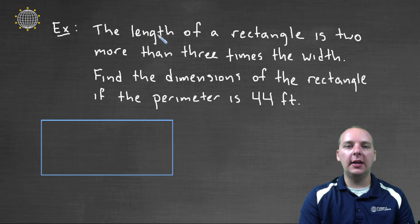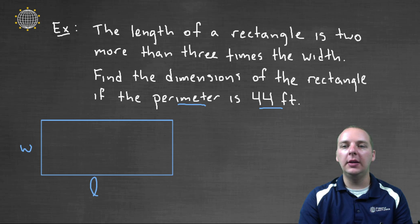So here it sounds like the length is a bigger number than the width, because the length is two more than three times the width. So it looks like the width would be the smaller value, and the length would be the larger value here. And they want us to find the dimensions of the rectangle if the perimeter is forty-four feet.